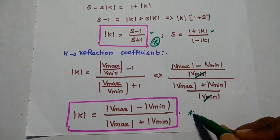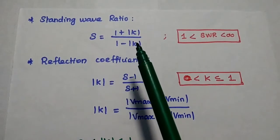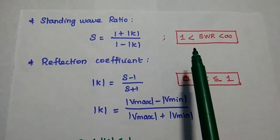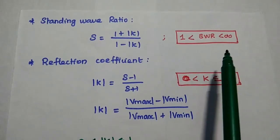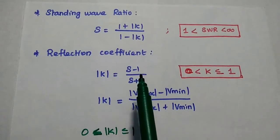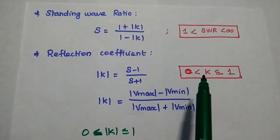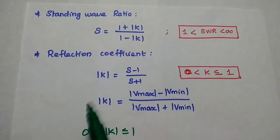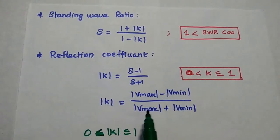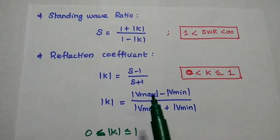So, to summarize the important formulas: the standing wave ratio S equals 1 plus modulus of K divided by 1 minus modulus of K, and its value ranges from 1 to infinity. The reflection coefficient K equals S minus 1 divided by S plus 1, and its value ranges from 0 to 1. It can also be written as Vmax minus Vmin divided by Vmax plus Vmin. These three formulas are very important.